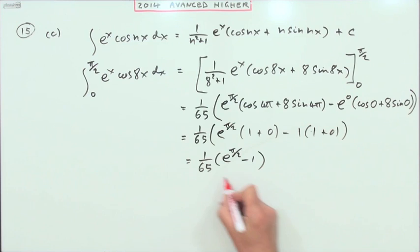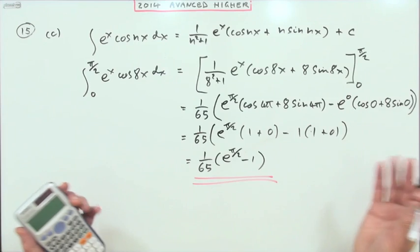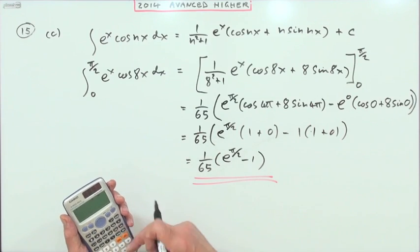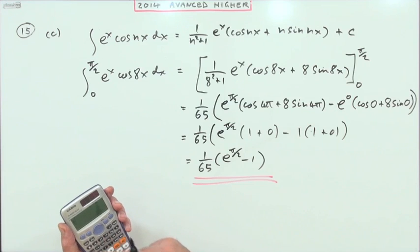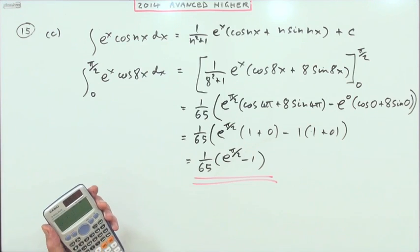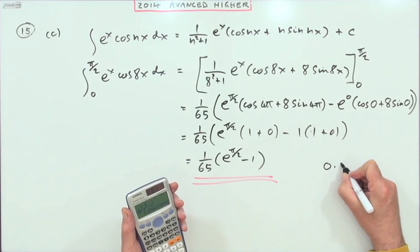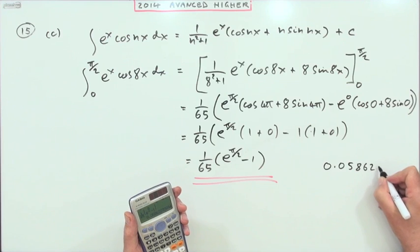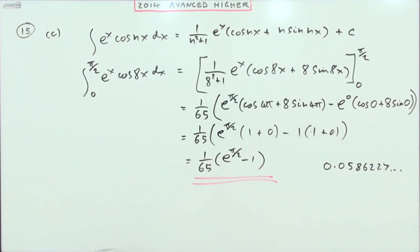For the exact answer. Now if you want a decimal equivalent, just to be annoying, then what would that be? Just use a calculator: 0.0586227 and so on.